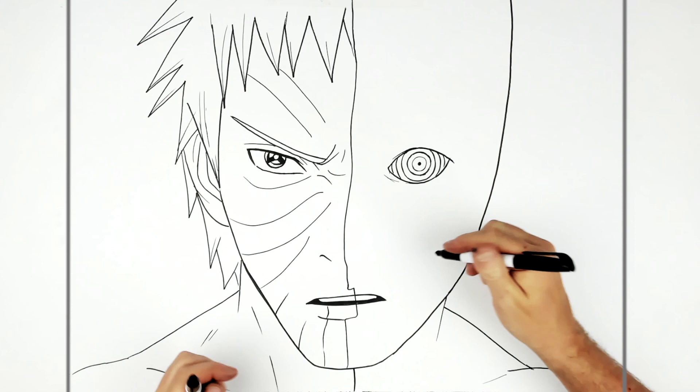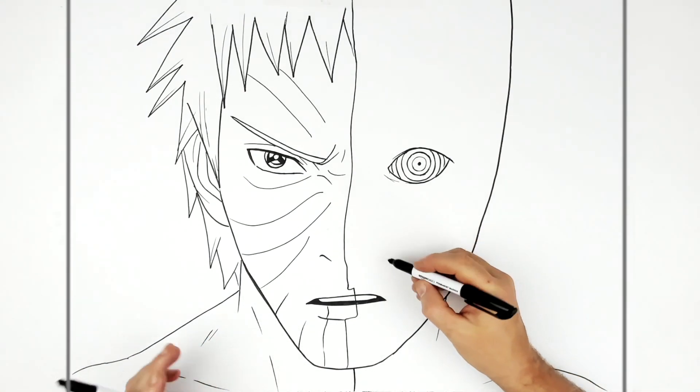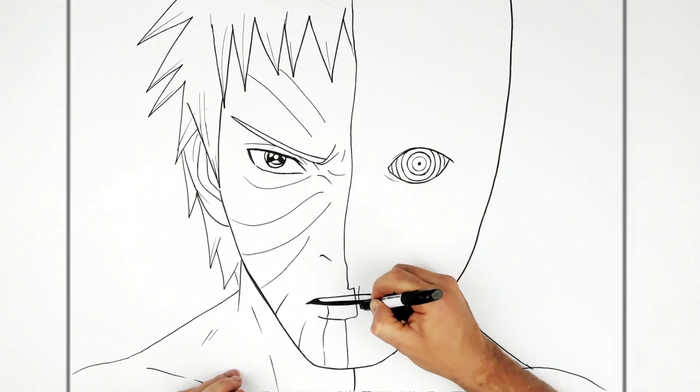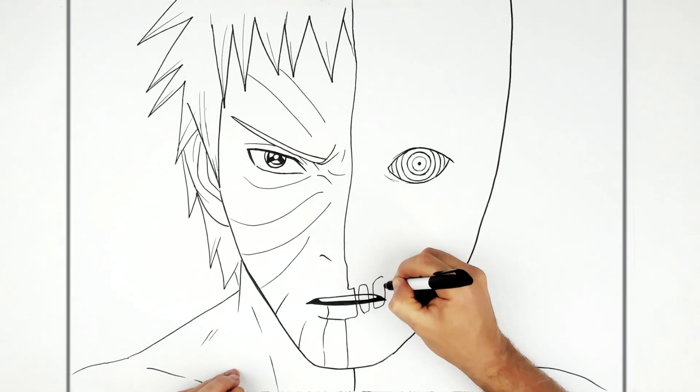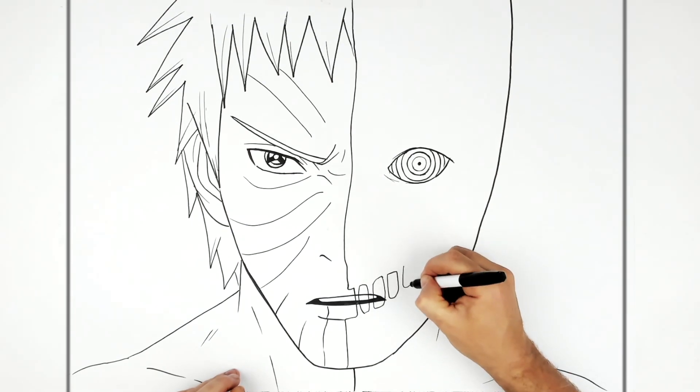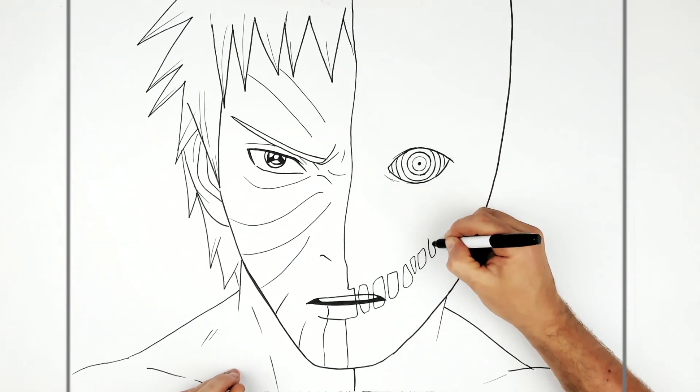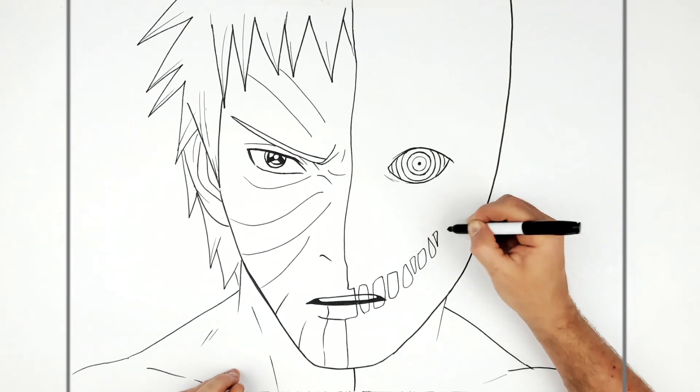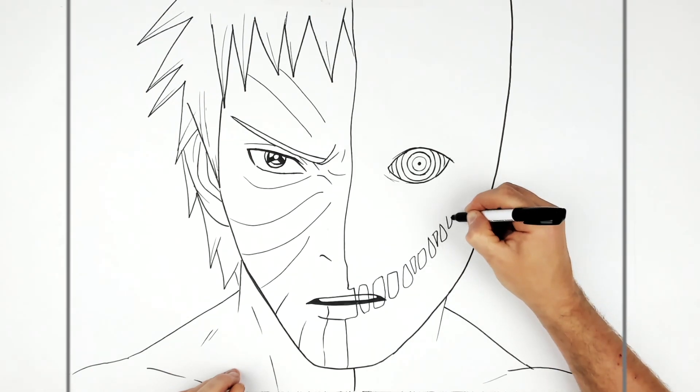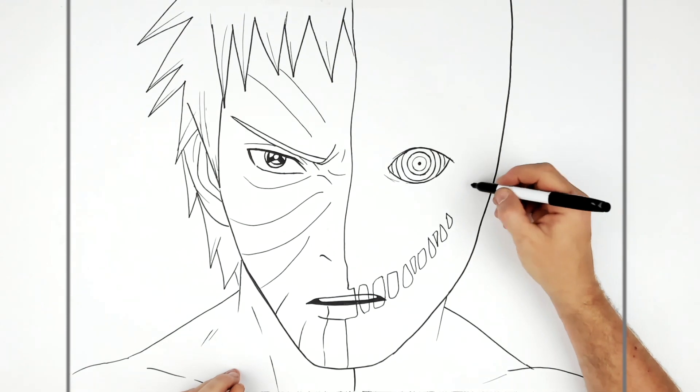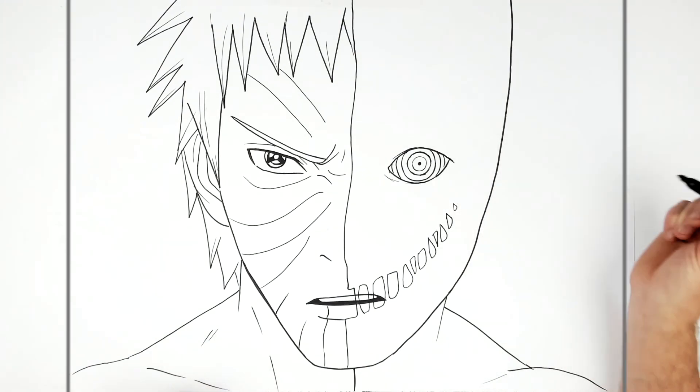And then Black Zetsu has like an open stitched kind of mouth here as well with all these holes in it. So it's kind of like a creepy sort of ooze situation going up to this real long smile. Like so.